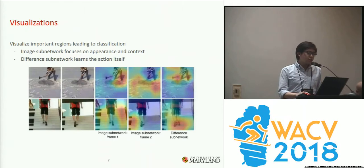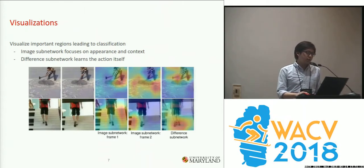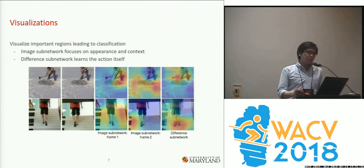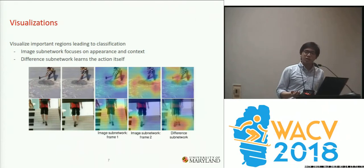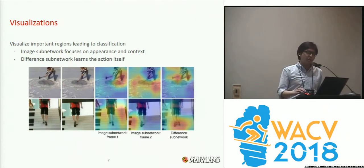We visualize the important regions that lead to the classification. The image sub-network focuses on the appearance and context, like the stairs, but the difference sub-network learns the action itself, like the foot for climbing the stairs.